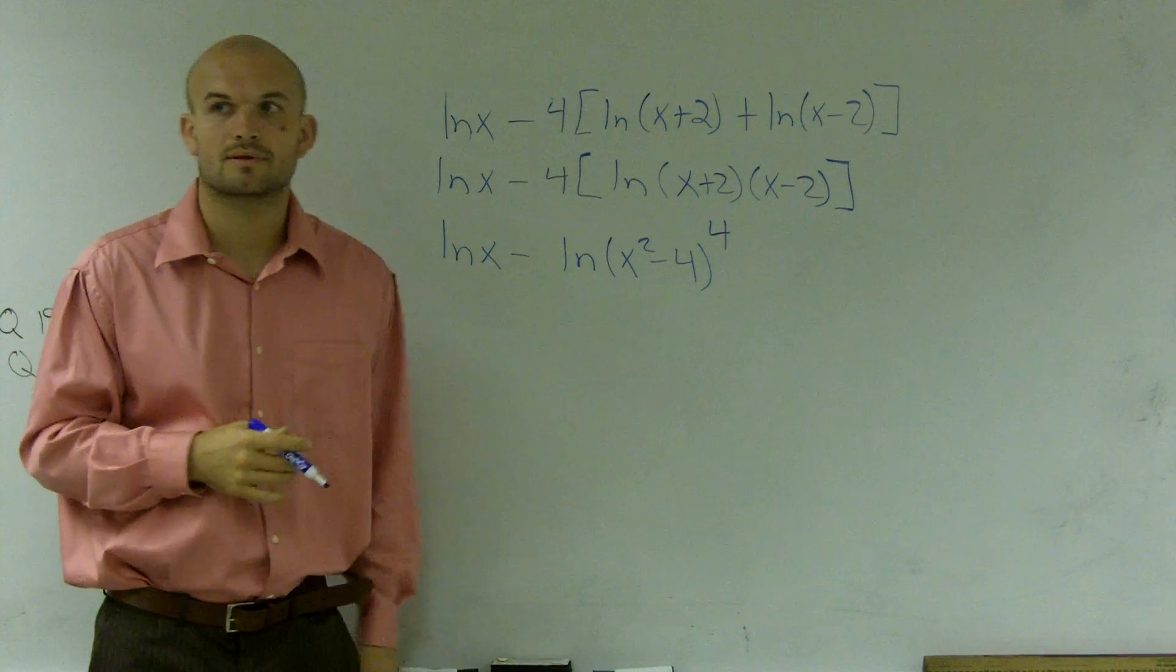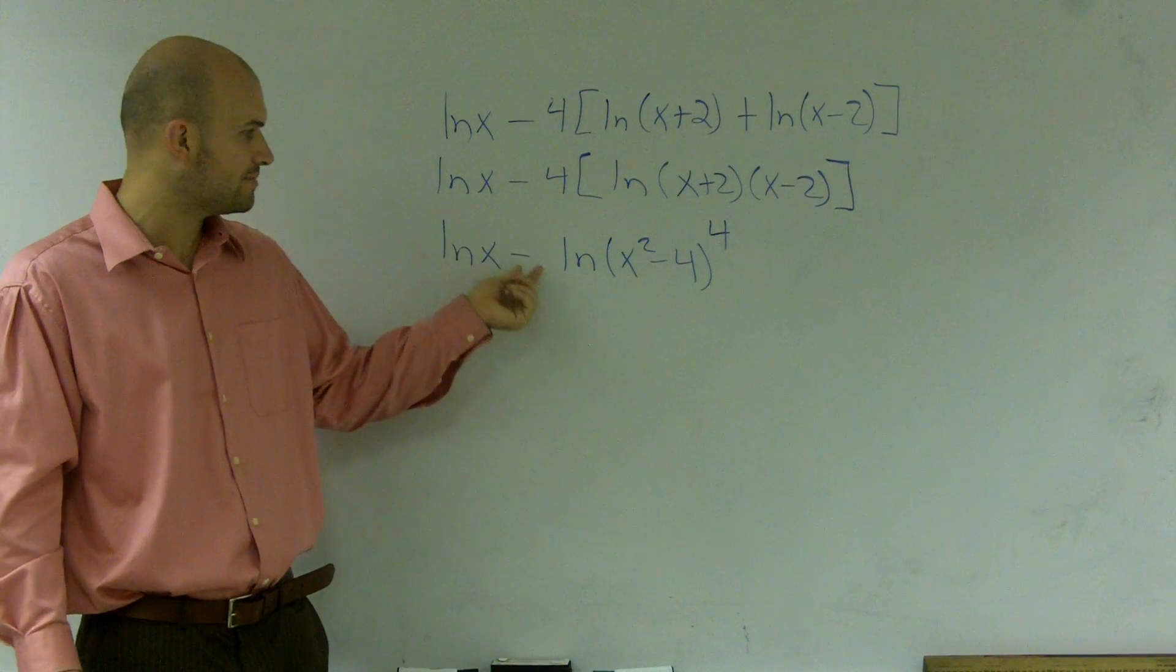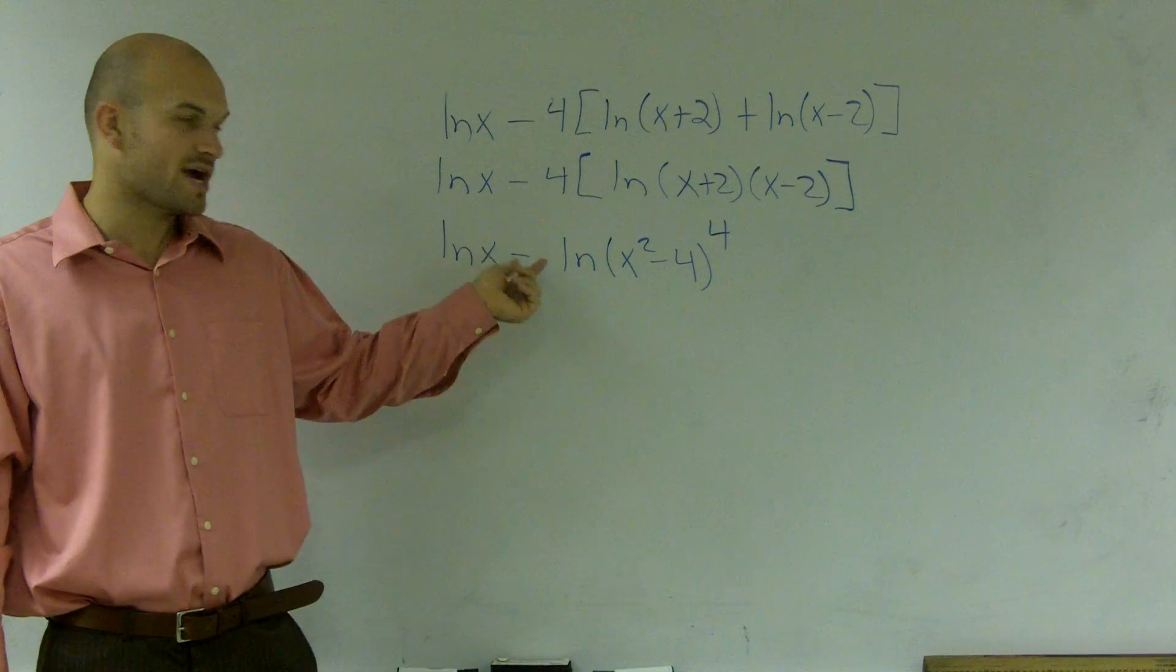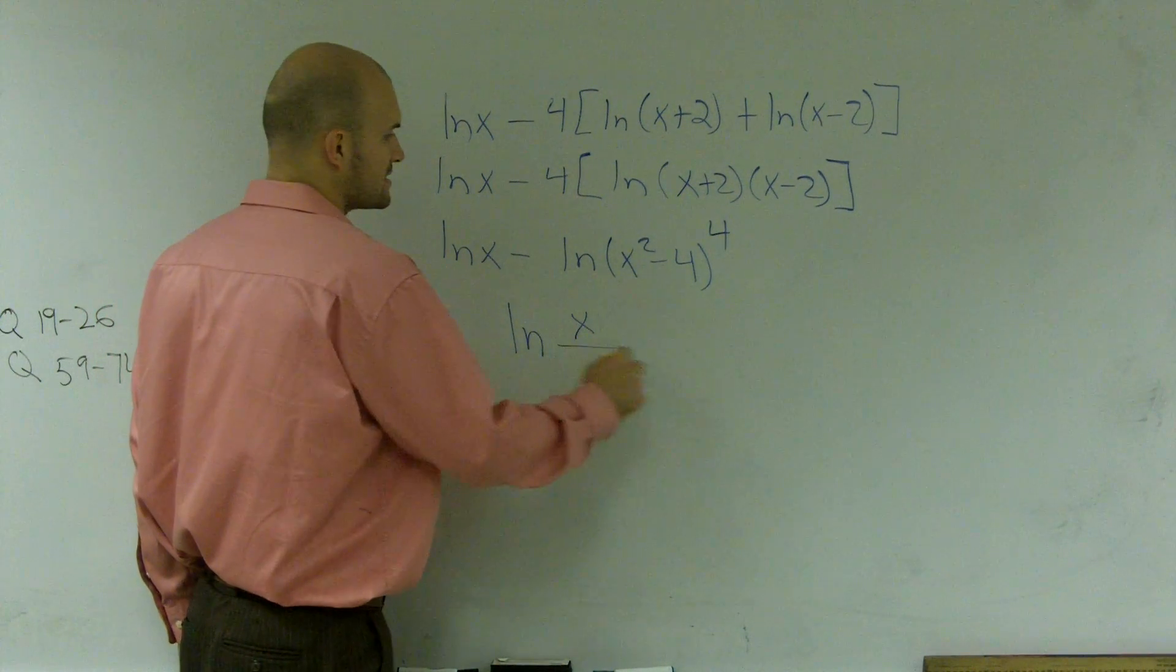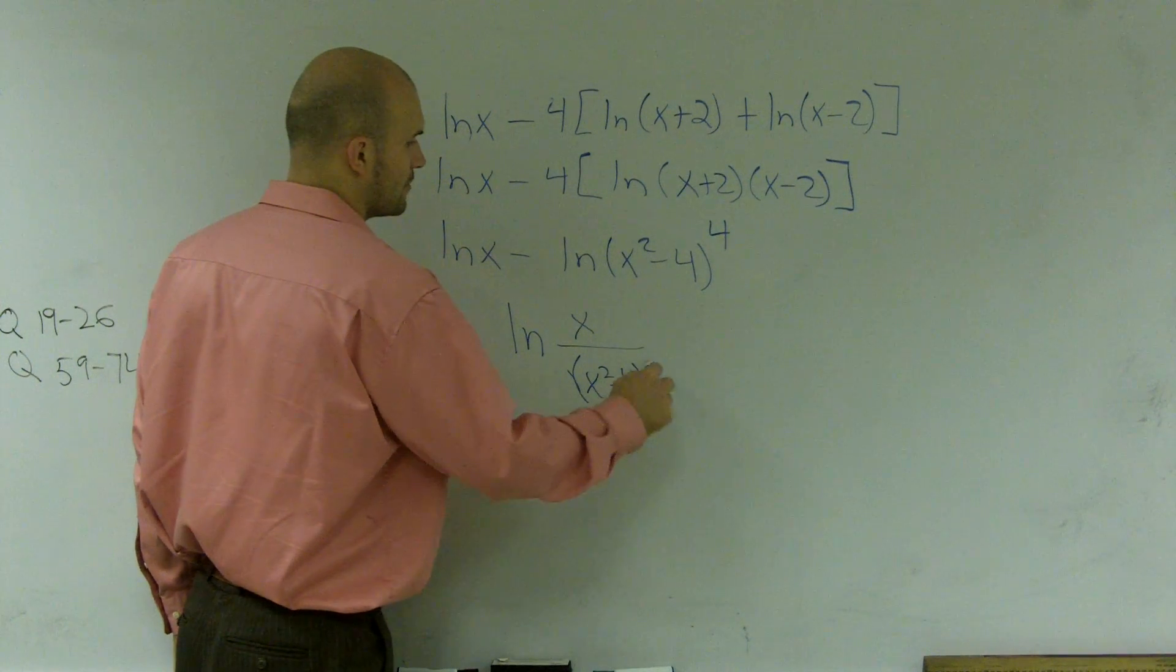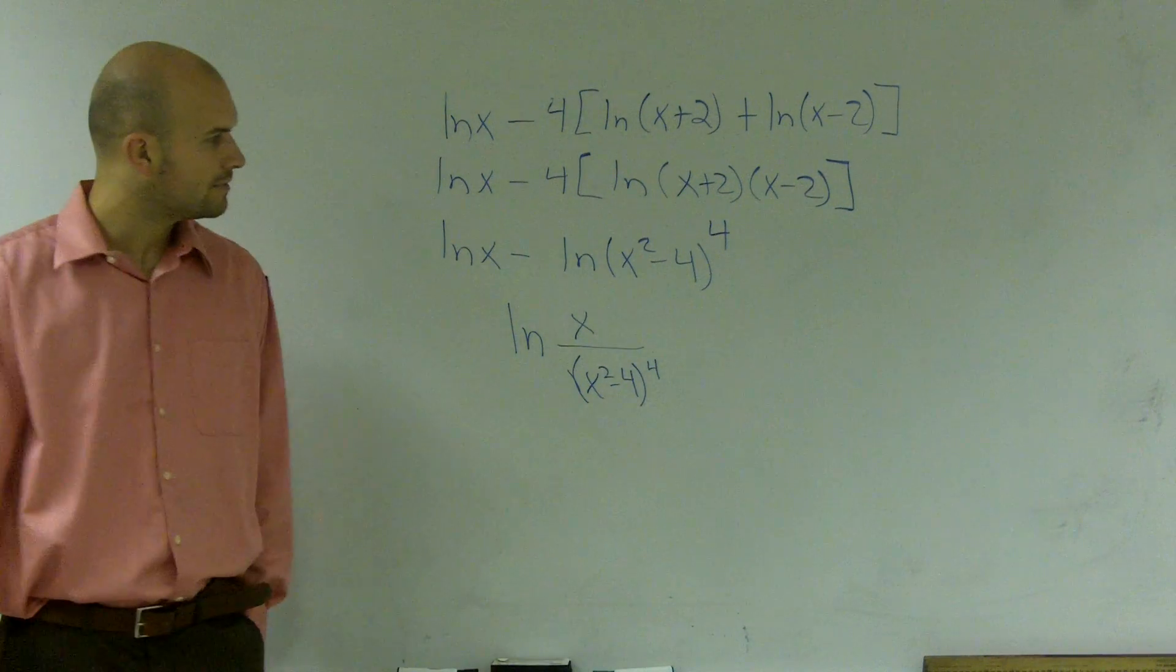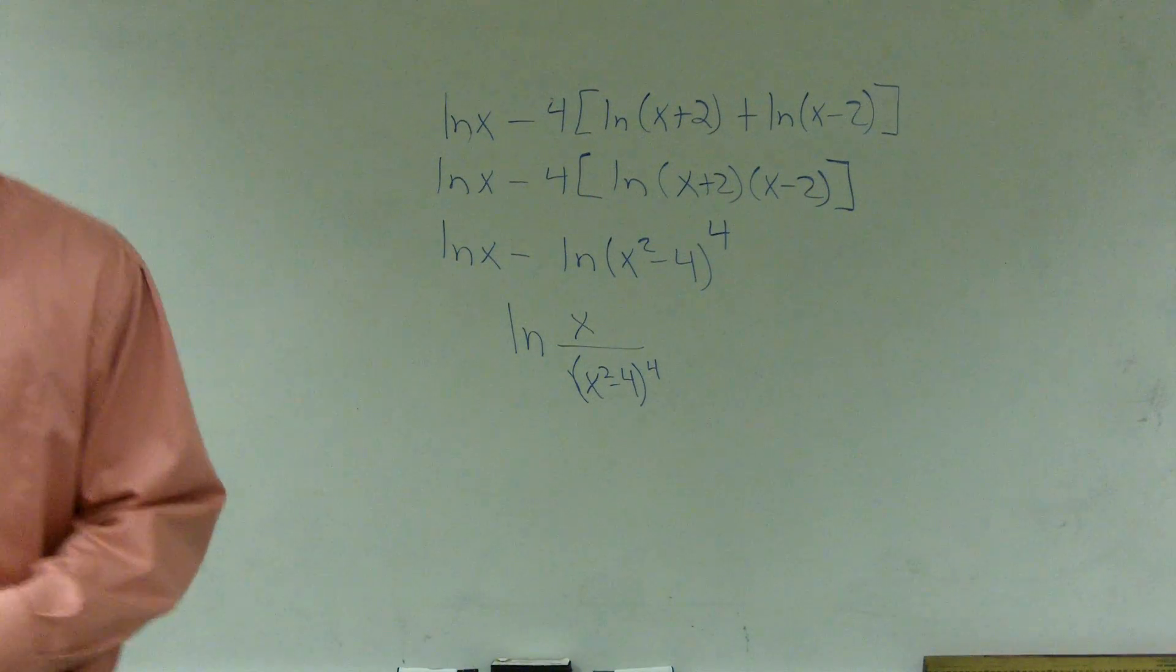Okay? Then I can rewrite two logarithms as a single logarithm of subtraction using division. So now I can rewrite this as ln of x divided by (x squared minus 4) to the 4th power. And that's my problem.